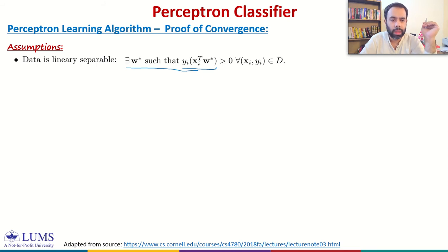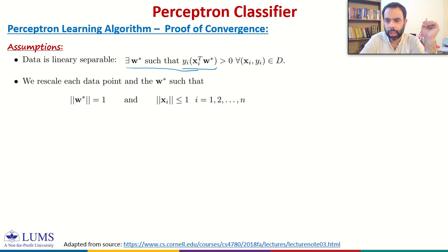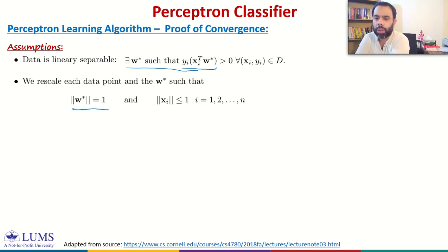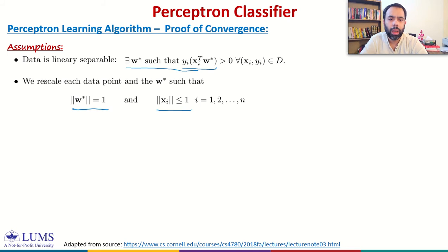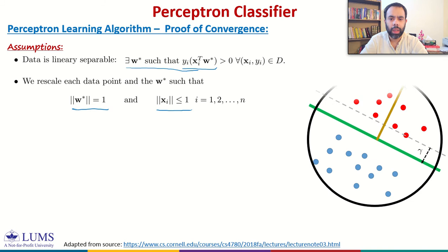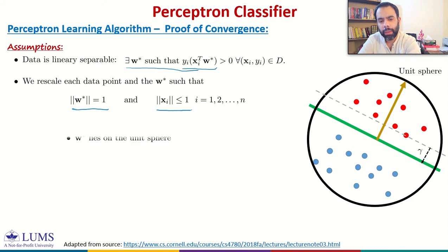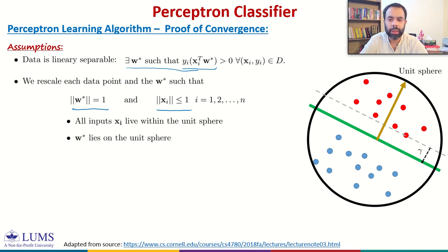Without loss of generality, we rescale each data point and w* such that the norm of w* is equal to one, and the norm of every feature vector is bounded above by unity. If you visualize this in the feature space, it means that w* lies on the boundary of the unit sphere and all the inputs lie inside the unit sphere.